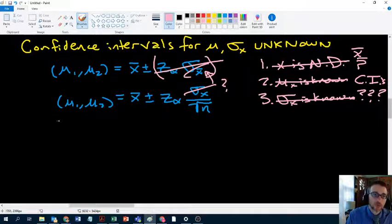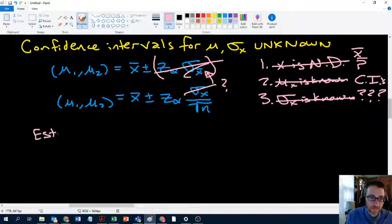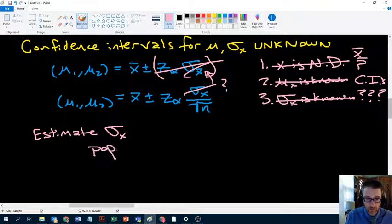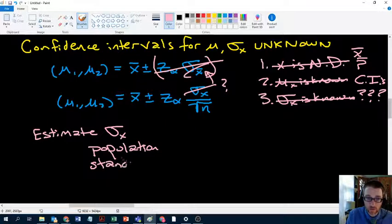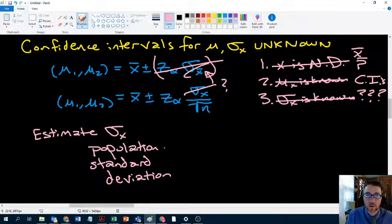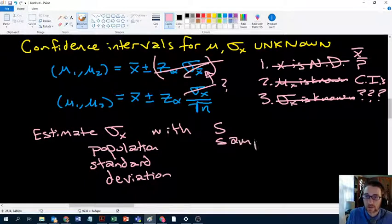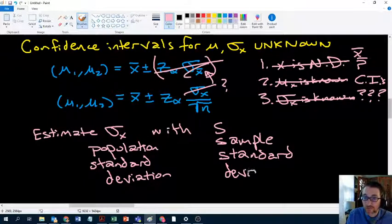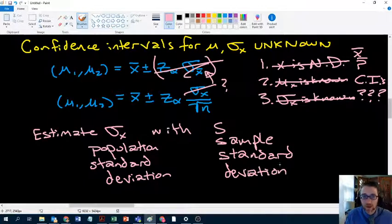Well, it turns out that there's always a standard deviation we can use. So we can estimate sigma x, which is, if you recall, the population standard deviation. That's why we don't know it generally, it's because it would require being able to observe every element in the population with s, which is our sample standard deviation.